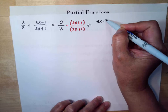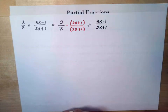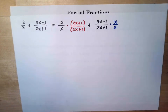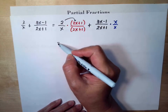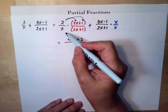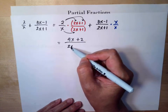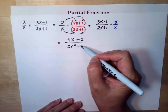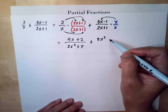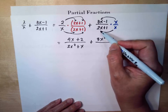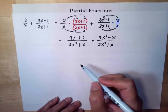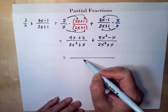Then for the second term, we multiply by the denominator of the first term, which is x — so multiply by x over x. We distribute: 2 times 2x is 4x, and 2 times 1 is positive 2. In the denominator, x times 2x is 2x squared and x times 1 is x. Then distribute the x: 3x times x is 3x squared, and negative 1 times x is negative x, over 2x squared plus x.